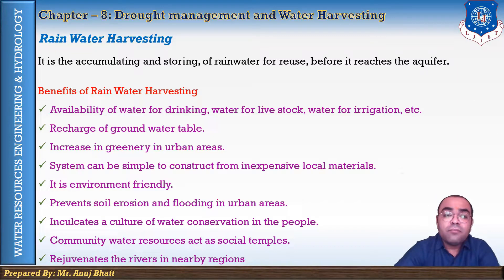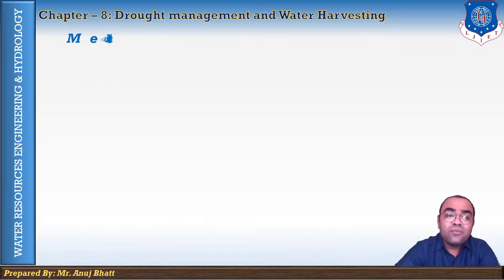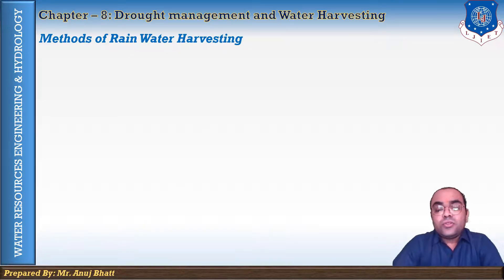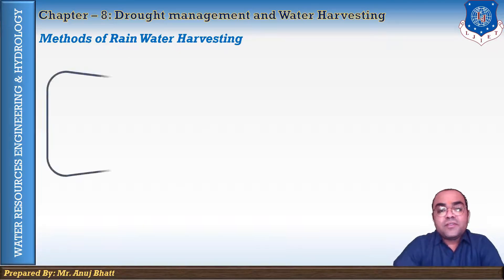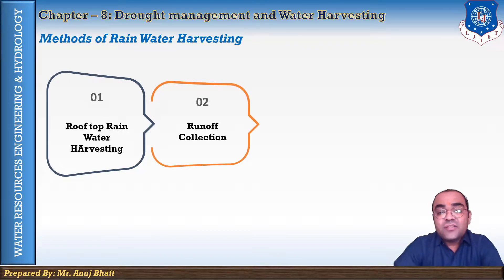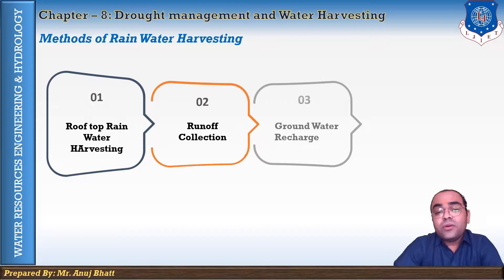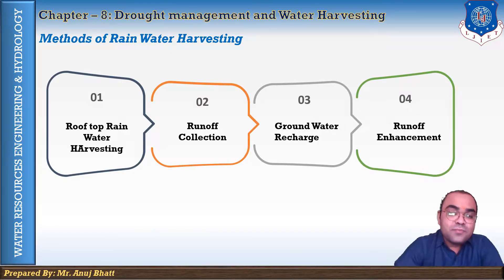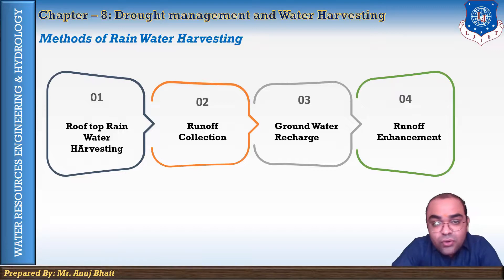There are a few methods by which we can perform rainwater harvesting. Four methods are: first, rooftop rainwater harvesting; second, runoff collection; third, groundwater recharge; and fourth, runoff enhancement.